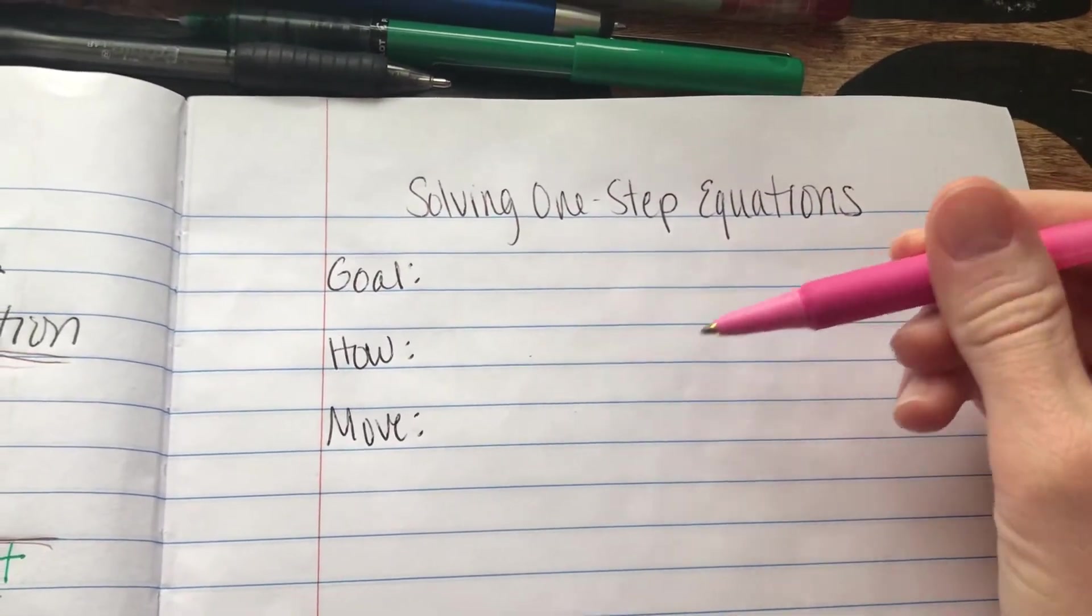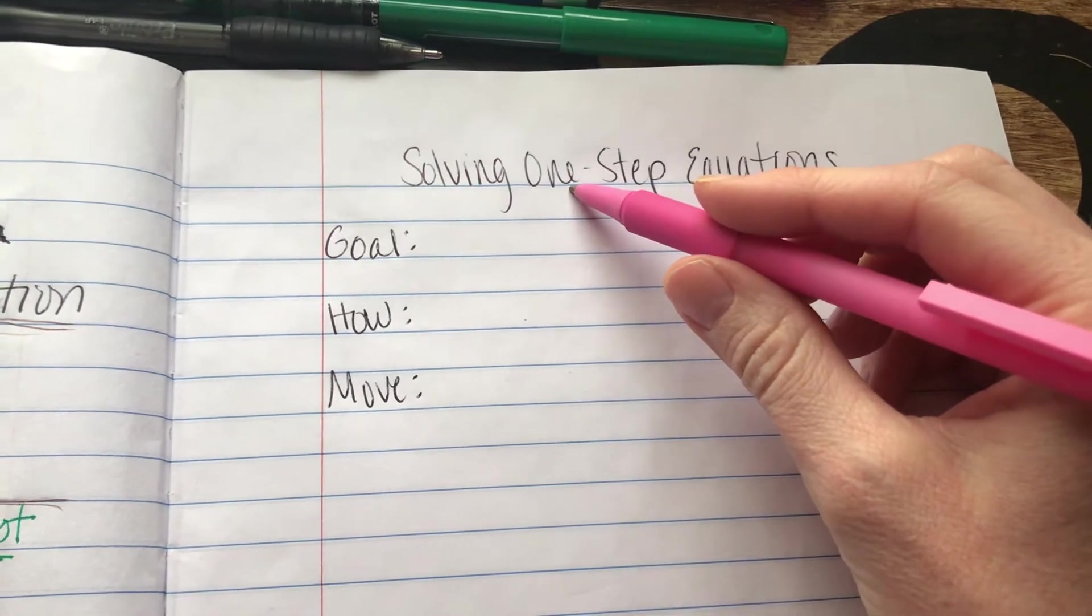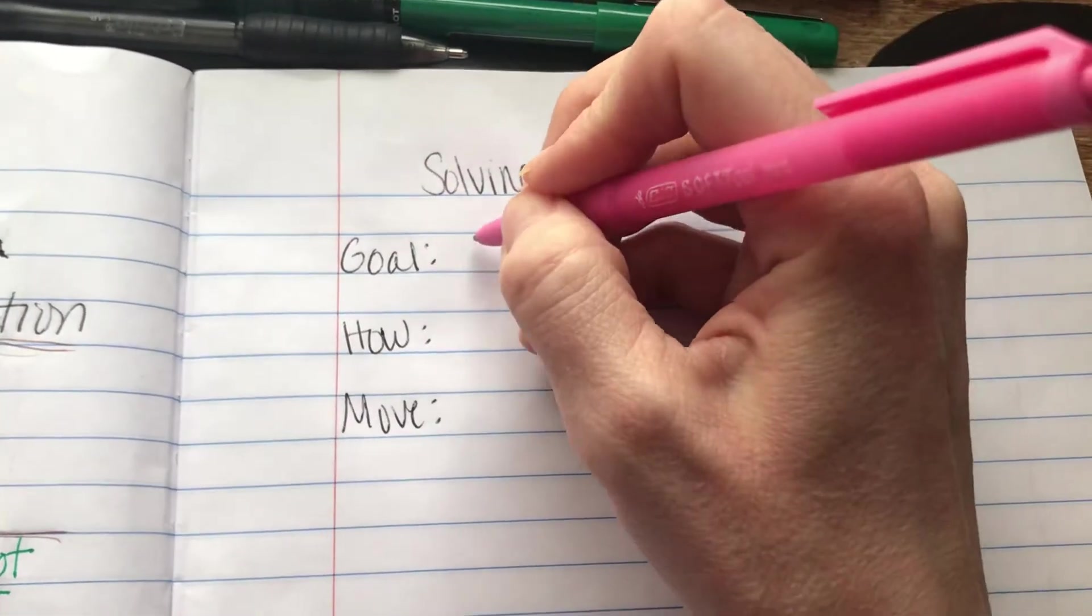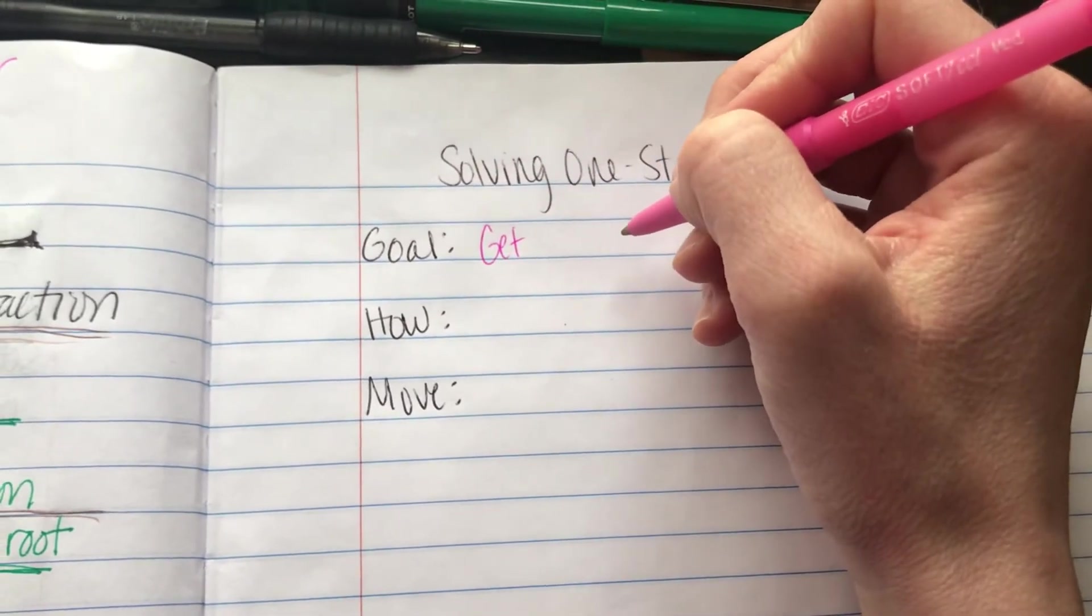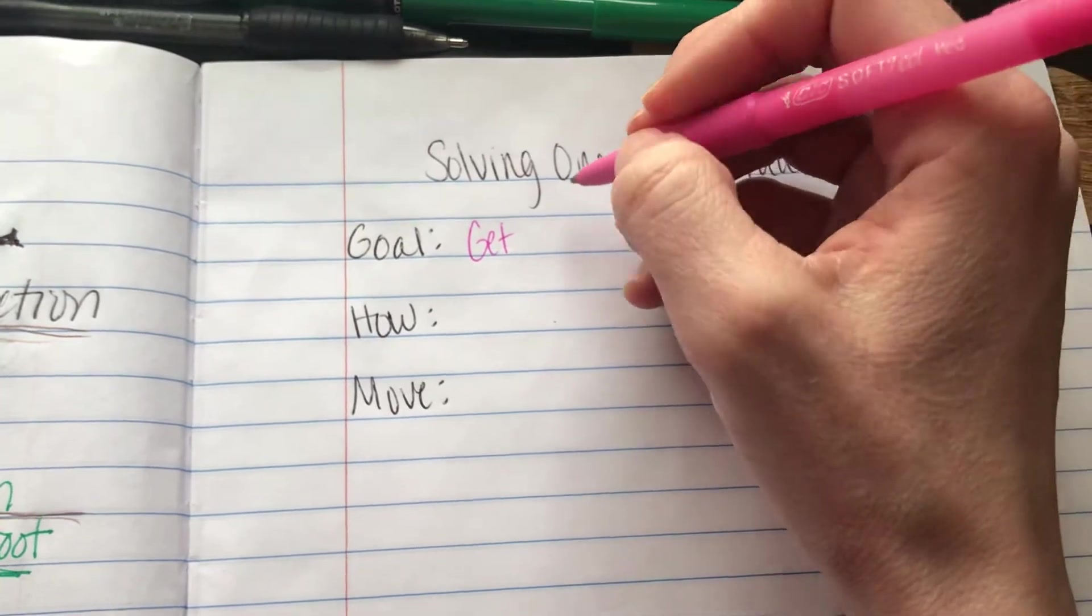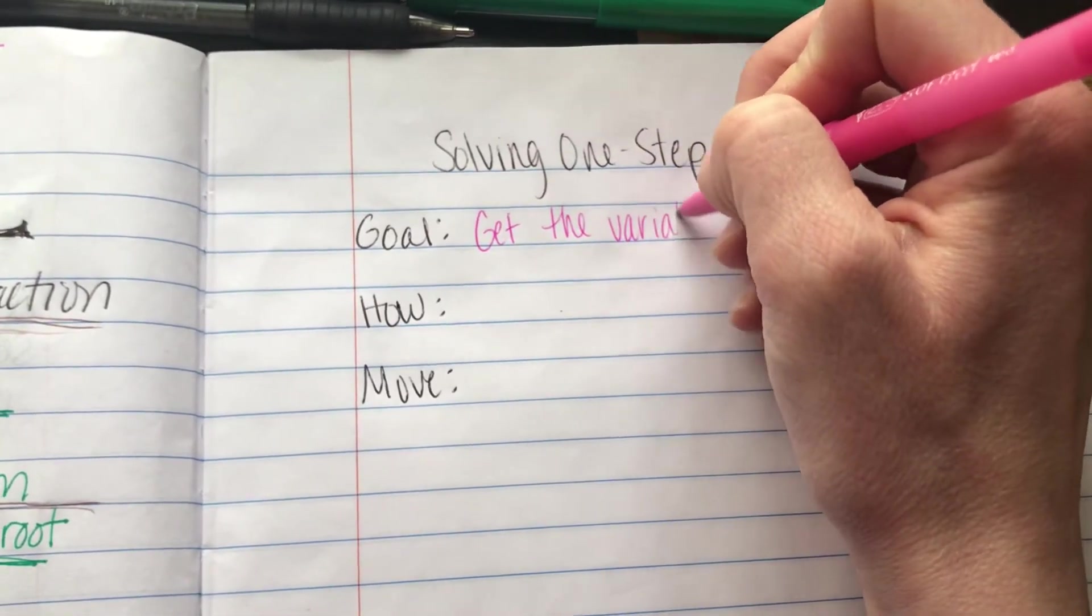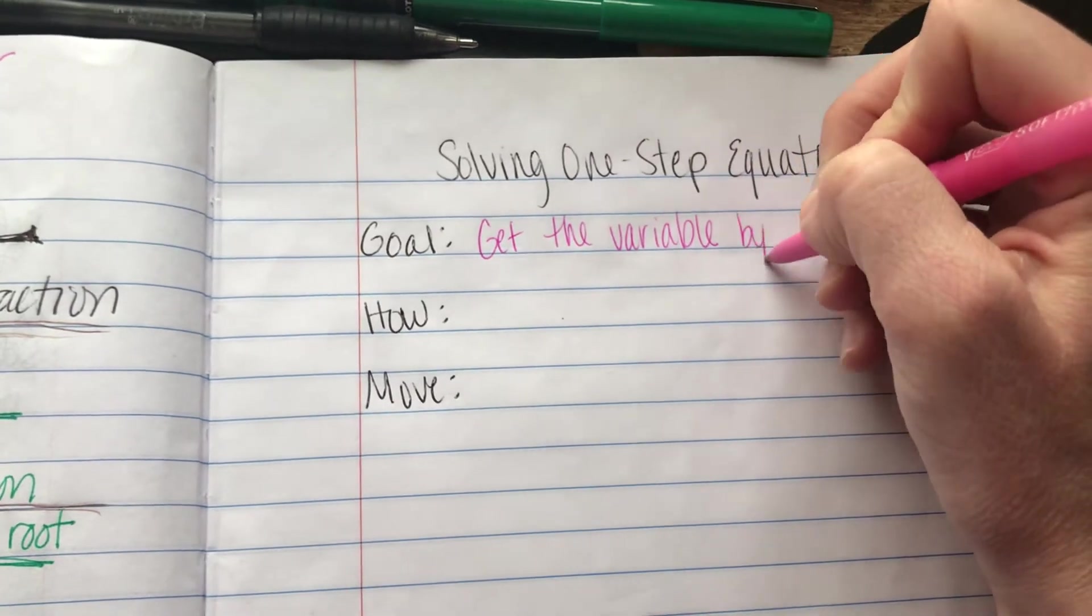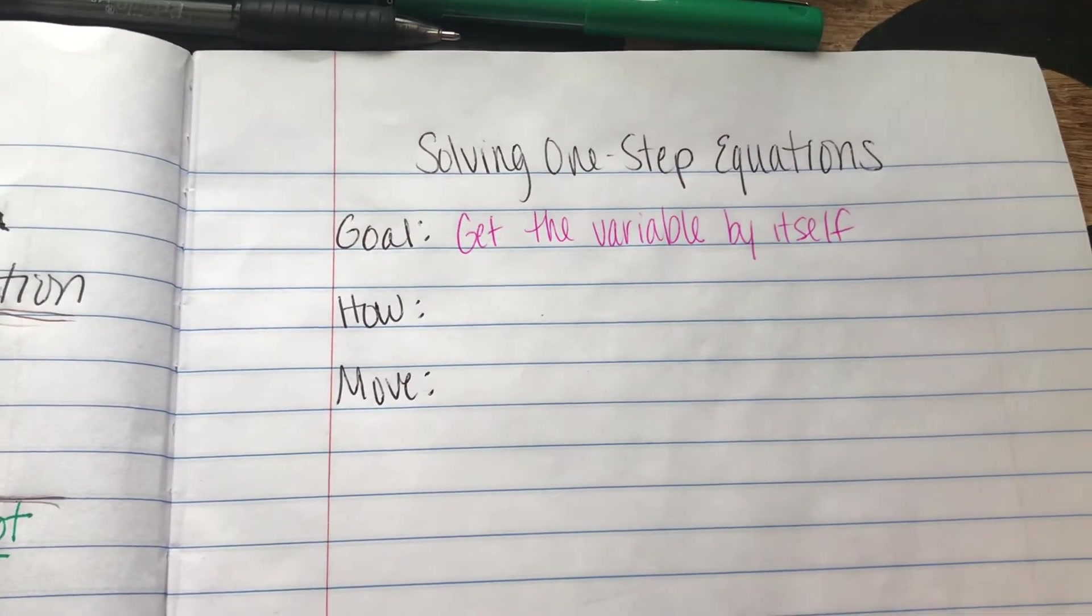So the goal when we're solving One-Step Equations, or sometimes they're called Single-Step Equations, is to get the variable by itself and that's what we're doing when we're solving for x or solving for a or something like that. We want to get the variable by itself on one side of the equal sign.